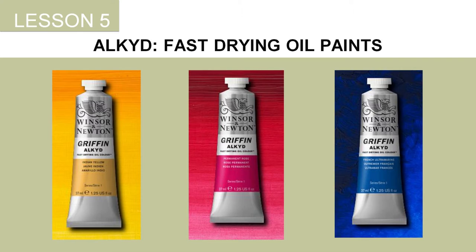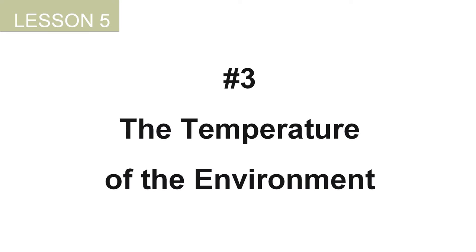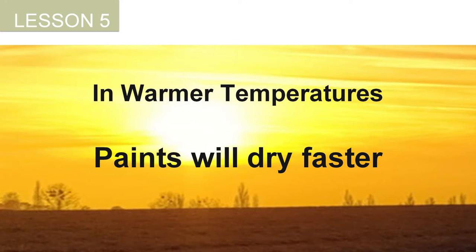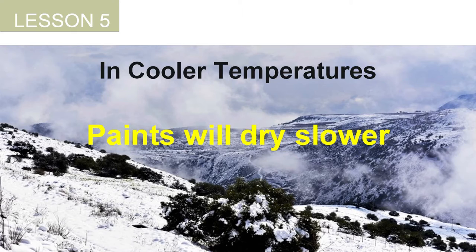Kit paints have a modifier that makes them dry faster than traditional oils. The next factor is the temperature of the environment — colors tend to dry more quickly in warmer temperatures, and drying slows down in cooler seasons and cooler rooms.